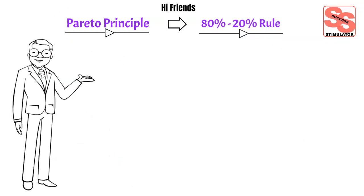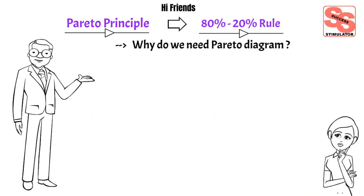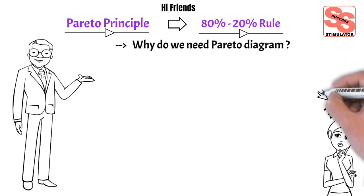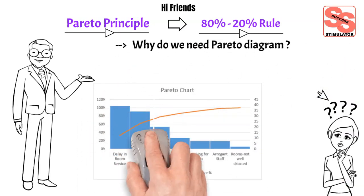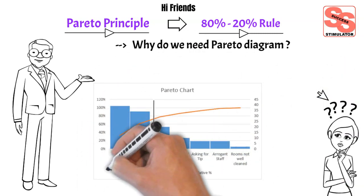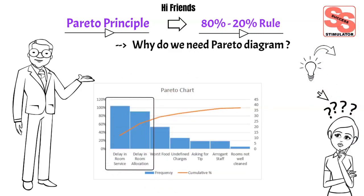Why do we need a Pareto diagram? When there are many problems or causes in a given situation and you want to focus on the most significant ones, a Pareto diagram would help you identify the most significant problem. It will support you in coming out of the problem sooner than the natural course.